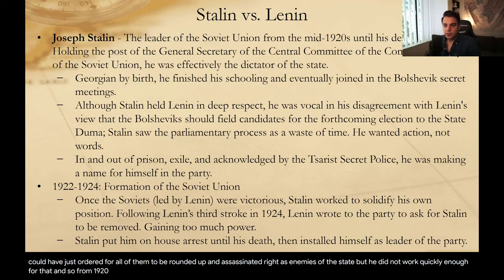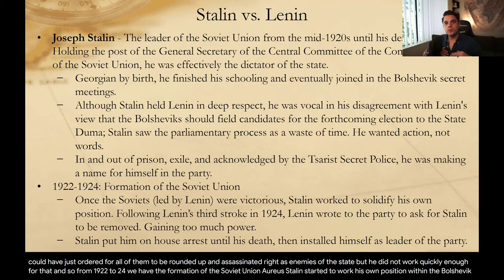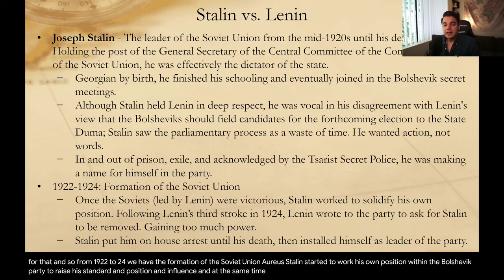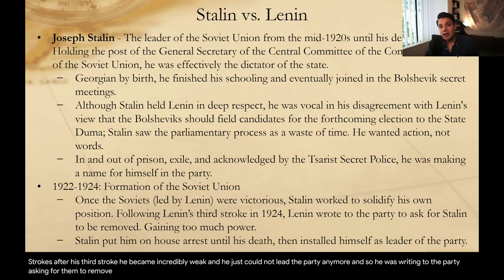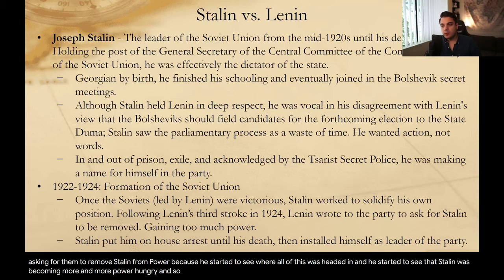From 1922 to 1924, we have the formation of the Soviet Union. Once Lenin was victorious, Stalin started to work his own position within the Bolshevik party to raise his standard, position, and influence. At the same time, Lenin was unfortunately having health issues — he was prone to strokes. After his third stroke he became incredibly weak and could not lead the party anymore. He was writing to the party asking for them to remove Stalin from power, because he started to see where all of this was headed — Stalin was becoming more and more power-hungry.